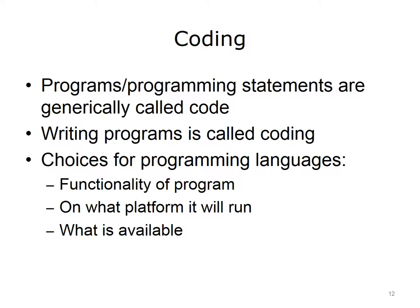Programs and programming statements are also referred to as code, which is short for computer code. Writing programs is therefore referred to as coding. There are many different programming languages available. Programmers must select one to use. The choice of programming language depends on several factors. First, what is the program going to do? If it will run within a web page on a client computer, then a scripting language like JavaScript may be best. If it is going to run on a Windows PC, then a Microsoft-developed language like C Sharp might be chosen. If a program is to run on multiple different machines, Java might be the best choice. Ultimately, programmers are constrained by what programming languages they have access to. For example, languages like Java are freely available, but developing in a Windows environment requires purchasing software tools that can be expensive.